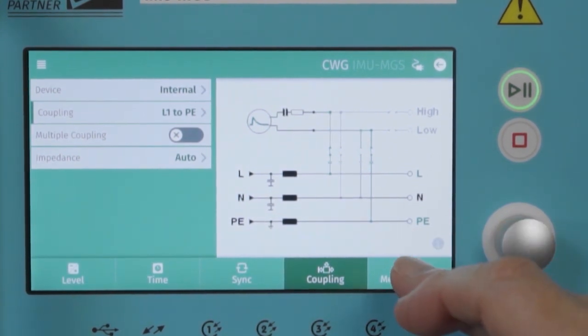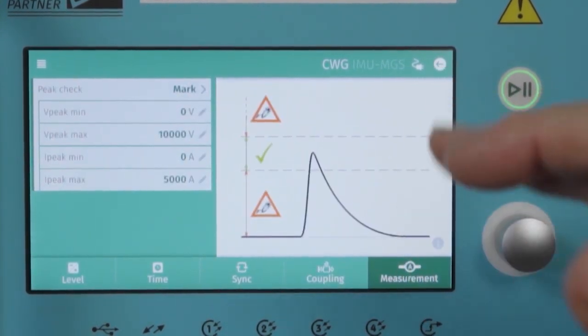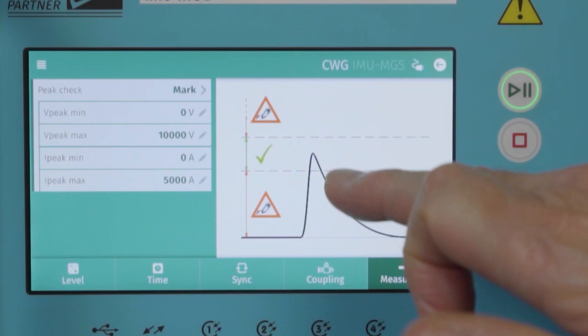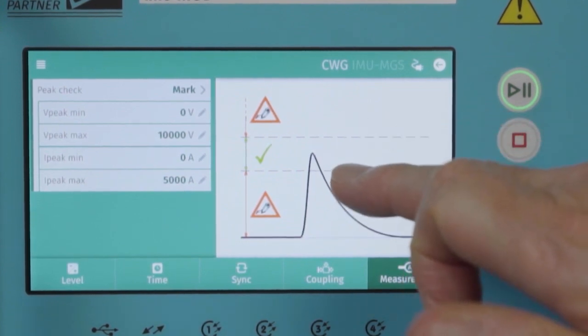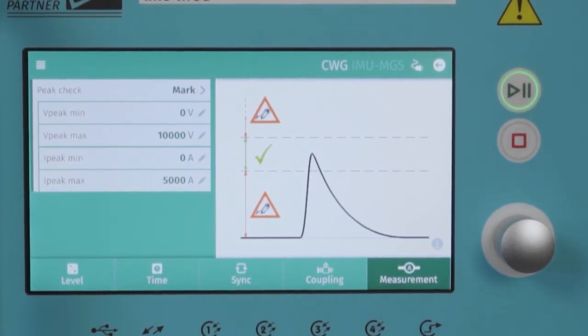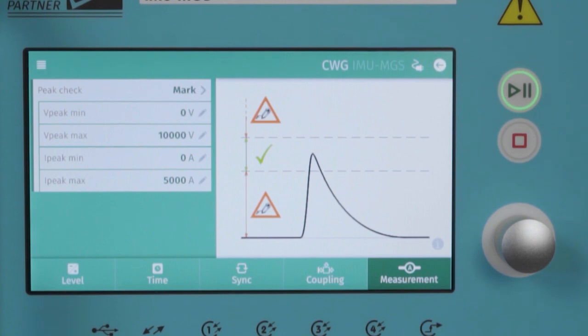Additionally, we offer measurements of the peak voltage and current impulses in the generator. We can select a window with a maximum and a minimum to determine whether the test will be passed or failed and whether the test should progress or stop.